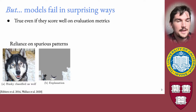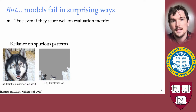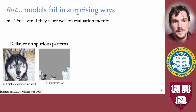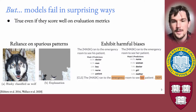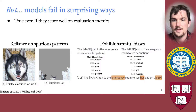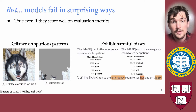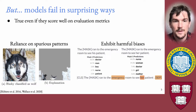One way models can fail is that they can rely on spurious patterns in the data. If we look at this image here, the model learns to make predictions using the background of the image. Models can also exhibit harmful biases — here we have an example of an NLP model that learns to associate the pronoun 'her' with the profession nurse more so than doctor. And even though models may do well according to evaluation metrics, sometimes it's difficult to figure out that these error patterns are occurring.